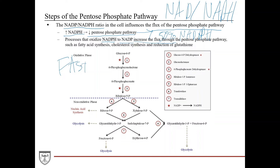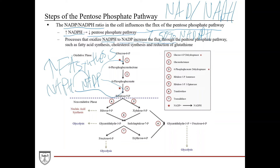The pentose phosphate pathway is responsible for about 50% of the NADPH in the cell. Processes that oxidize NADPH to NADP+ — such as high levels of fatty acid synthesis, cholesterol synthesis, and reduction of glutathione — increase the flux through the pentose phosphate pathway. The big takeaway is that the pentose phosphate pathway is intimately tied to these processes that use NADPH.